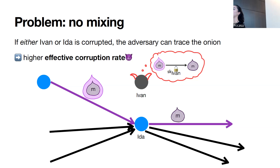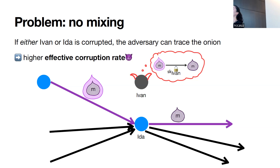Another issue with duo onions is that there are only two candidate intermediaries, so the probability the onion is dropped is still quite high — only a constant improvement. Ideally we'd expand to a larger number of candidates so the onion isn't dropped as long as one is online. But this creates a trade-off: more candidates means a higher effective corruption rate, and it's not clear how to set the number of candidates to simultaneously allow the onion to remain in the network and achieve mixing.